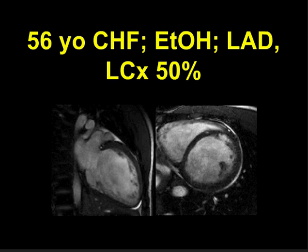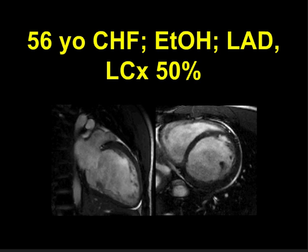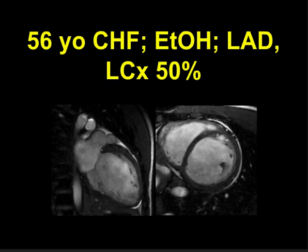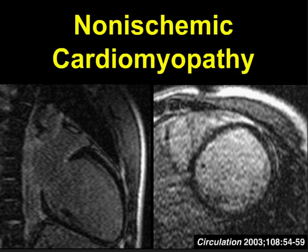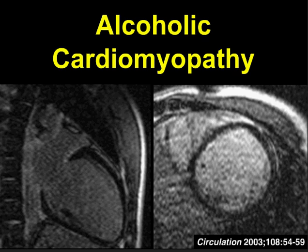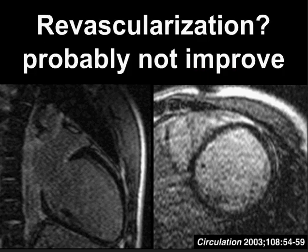So what about our patient? He has a big heart, and it's both the right and left ventricles that are enlarged. On delayed enhancement imaging, we see uniform low signal throughout the myocardium. This constellation of findings is most suggestive of a non-ischemic process — in his case, probably secondary to alcoholism. This is an important diagnosis because essentially what we're saying is that if we revascularize his diseased coronary arteries, he probably won't regain much in the way of systolic function.